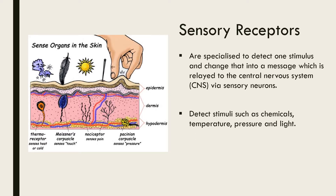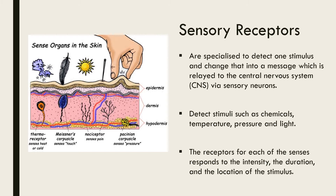Broadly, sensory receptors respond to one of four primary stimuli: chemicals, temperature, pressure and light. All sensory receptors rely on one of these four capacities to detect changes in the environment, but may be tuned to detect specific characteristics of each to perform a specific sensory function. Sensory receptors can generally respond to the intensity, location and duration of the stimulus.